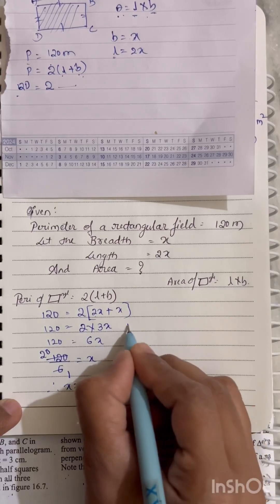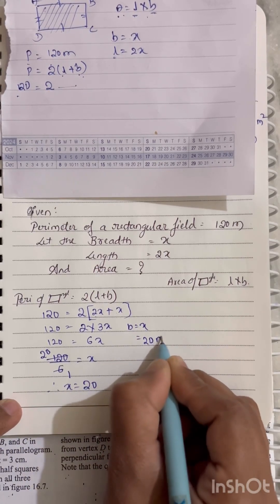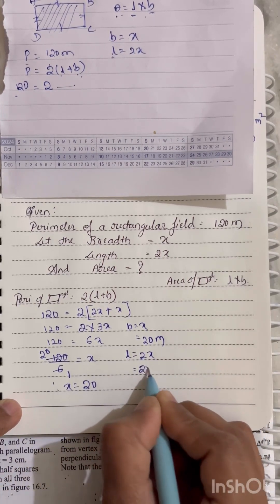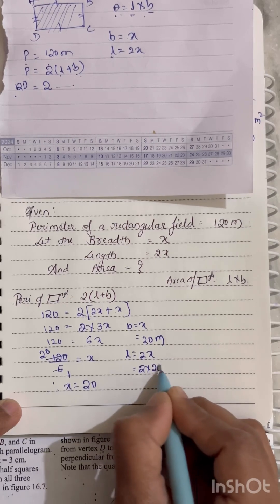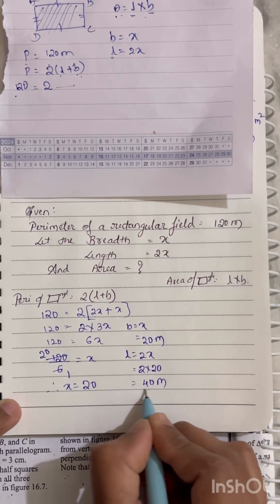Now for breadth, what we have considered is X. It means breadth will be equal to 20 meters. For the length, what we have considered is 2X. 2 as it is and X value we found is 20. Now 2 times 2 is 4, 0 as it is. It means length value we got is 40 meters.